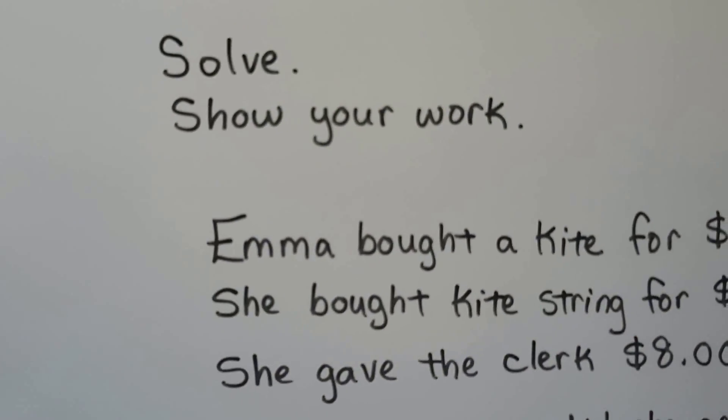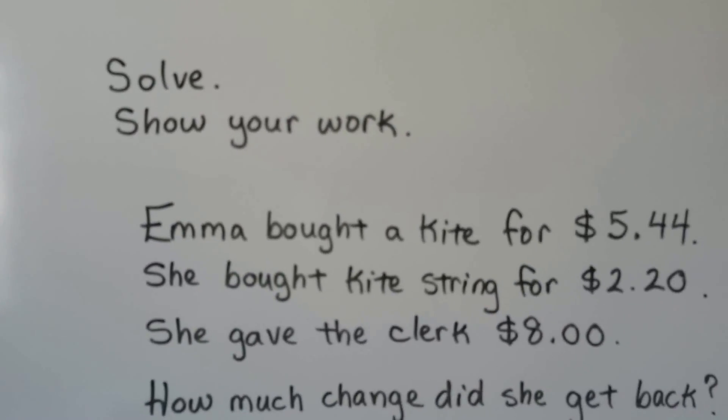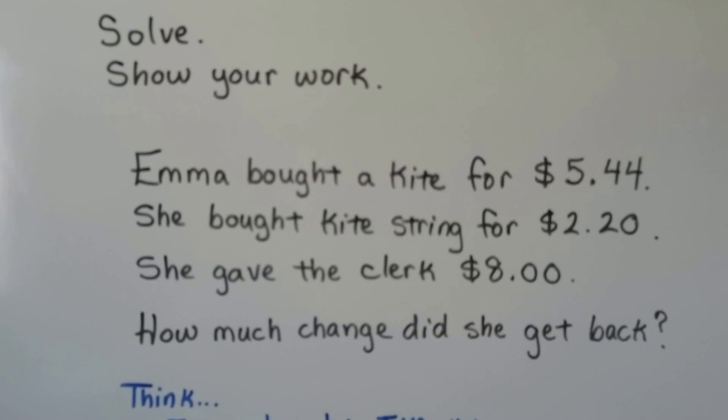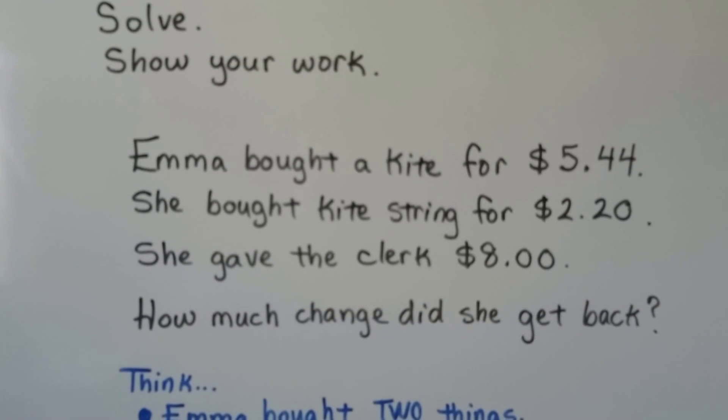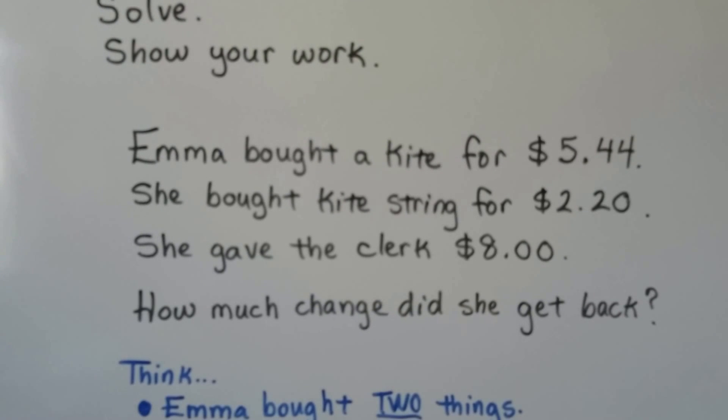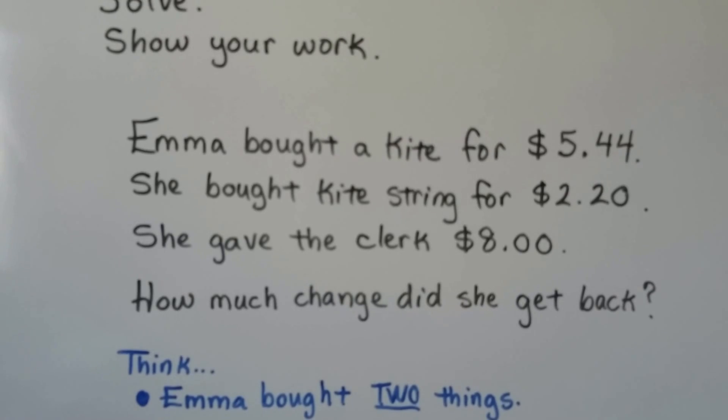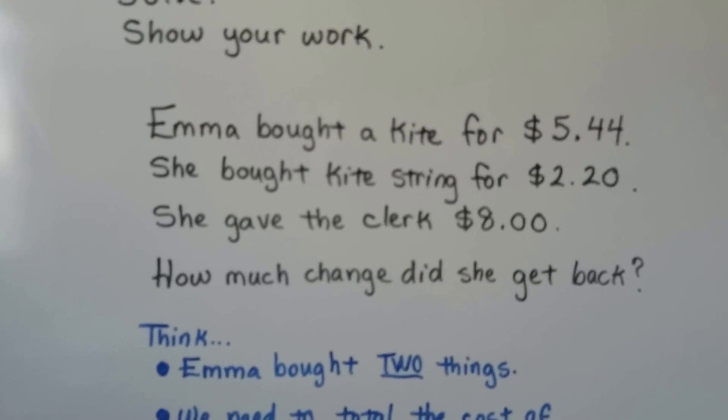So, solve and show your work. Emma bought a kite for $5.44. She bought kite string for $2.20. And she gave the clerk $8. How much change did she get back?